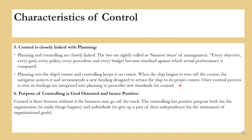Once the control process is over, its findings are integrated into planning to prescribe new standards for control. The purpose of controlling is goal-oriented and hence positive. Fundamentally, control is any process that guides activity towards predetermined goals — it is determining whether the activity is achieving the desired results or not. Thus, control is not an end in itself but a means to achieve desired objectives. The controlling has positive purpose both for the organization to make things happen and for individuals to give up a part of their independence for the attainment of organizational goals.